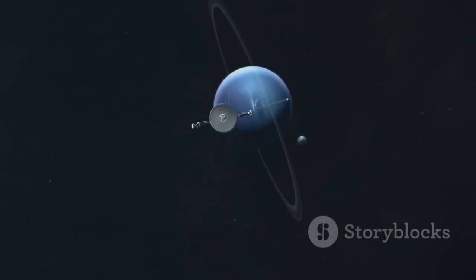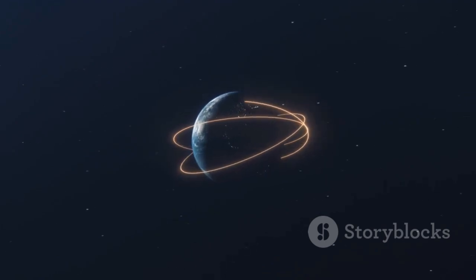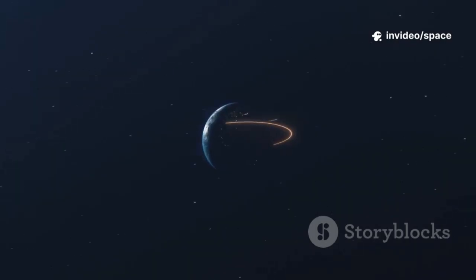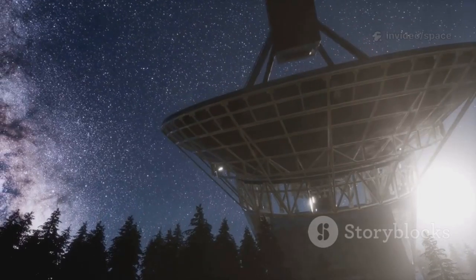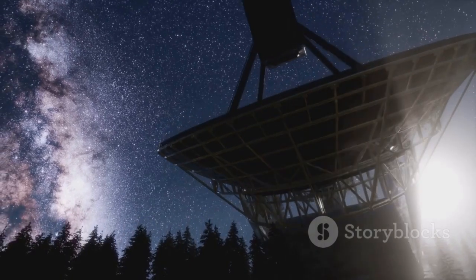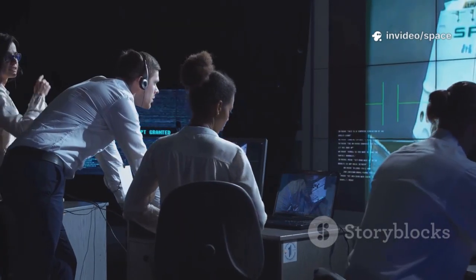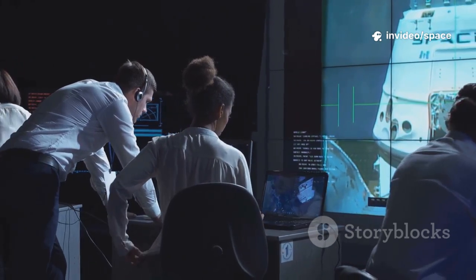Where does our solar system truly end? It's not a sharp border but a massive bubble, the heliosphere, formed by the sun's relentless solar wind. This invisible shield protects us from the galaxy's most dangerous radiation. The outer edge, known as the heliopause, is where the sun's power fades and the vastness of interstellar space begins. Scientists once pictured a clear-cut transition: a shockwave, a quiet zone, then a sudden leap into the galaxy beyond.